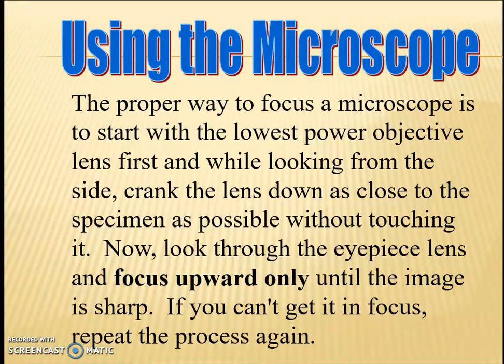The proper way to focus a microscope is to start with the lowest power objective — in our case 4x. Use the lowest power objective lens first, and while looking from the side, crank the lens down as close to the specimen as possible without touching the slide. Then look through the eyepiece and focus upward only until the image is sharp. If you can't get it in focus, repeat the process.